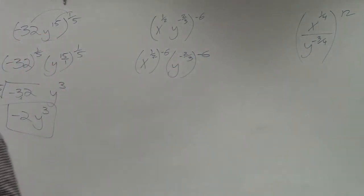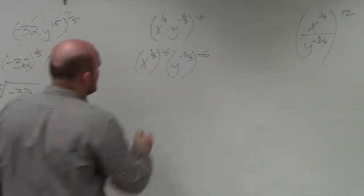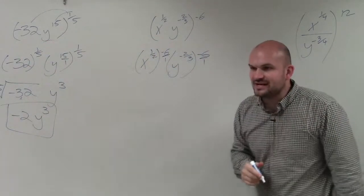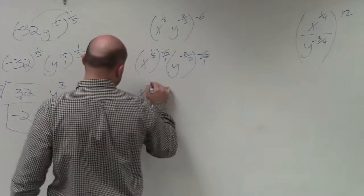So again, all we're going to do is multiply our exponents, or multiply our powers. So now, what is one-half times negative six? x to the negative third.